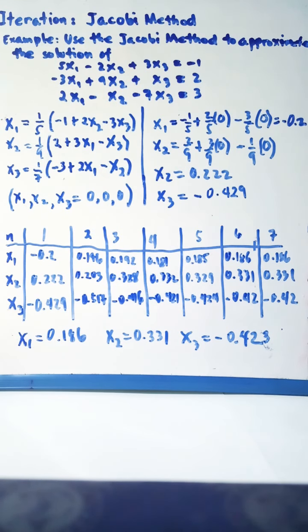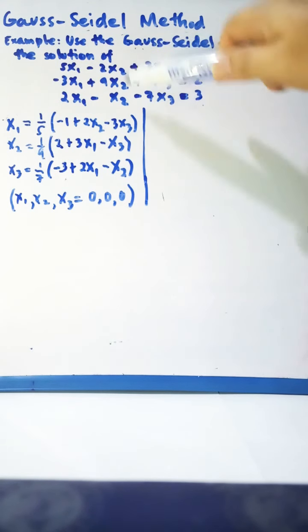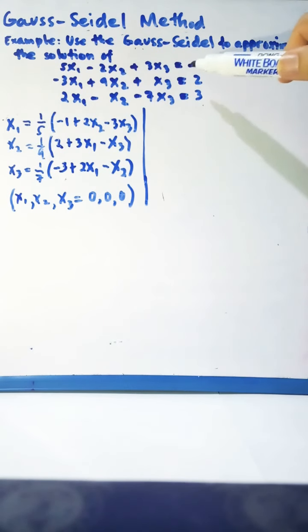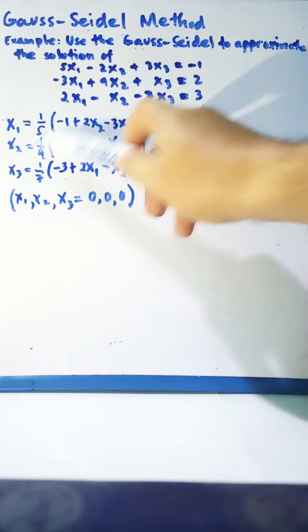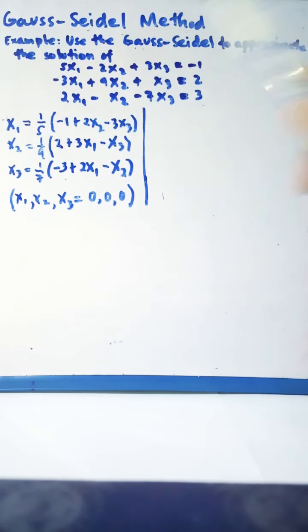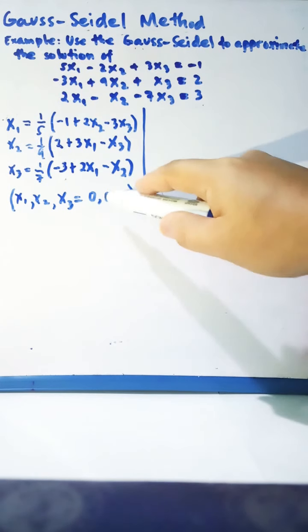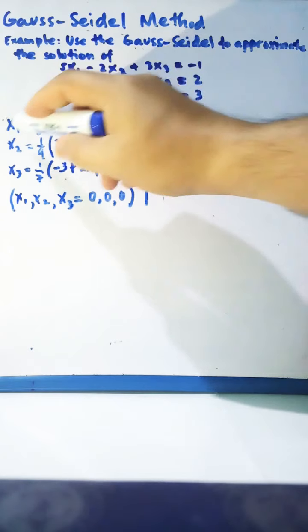That is the Jacobi method. Now we will use another iteration method called the Gauss-Seidel method. Given the same system of linear equations, we will use Gauss-Seidel to solve them. Just like Jacobi, we first do the transposition of the coefficients, and since we do not know the initial solution, we again use x₁ = x₂ = x₃ = 0.